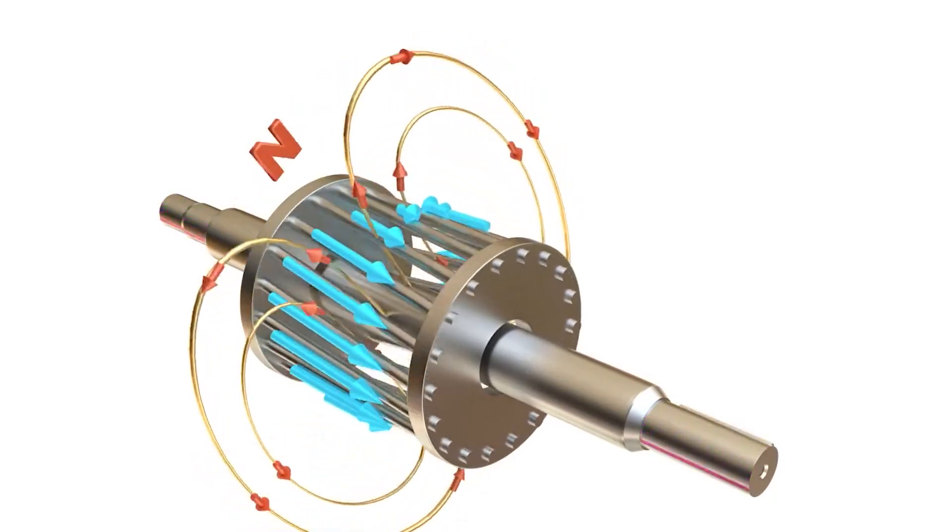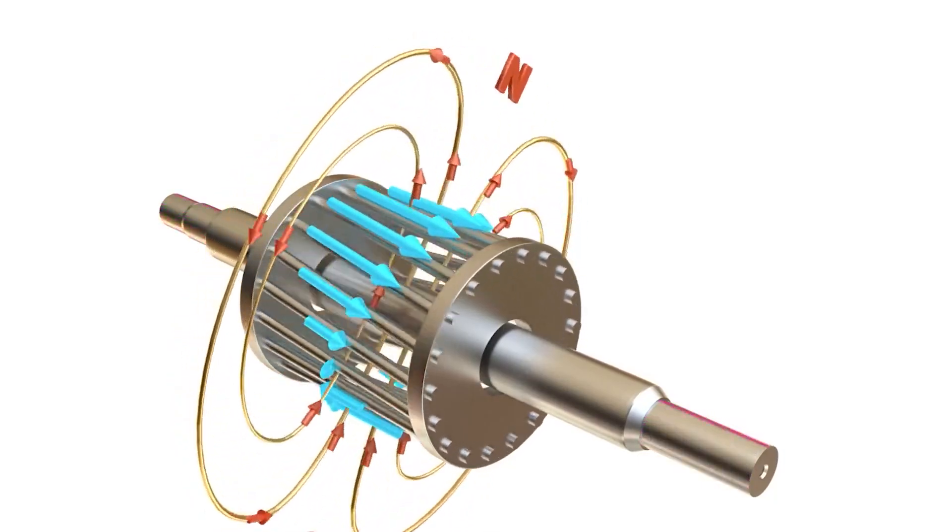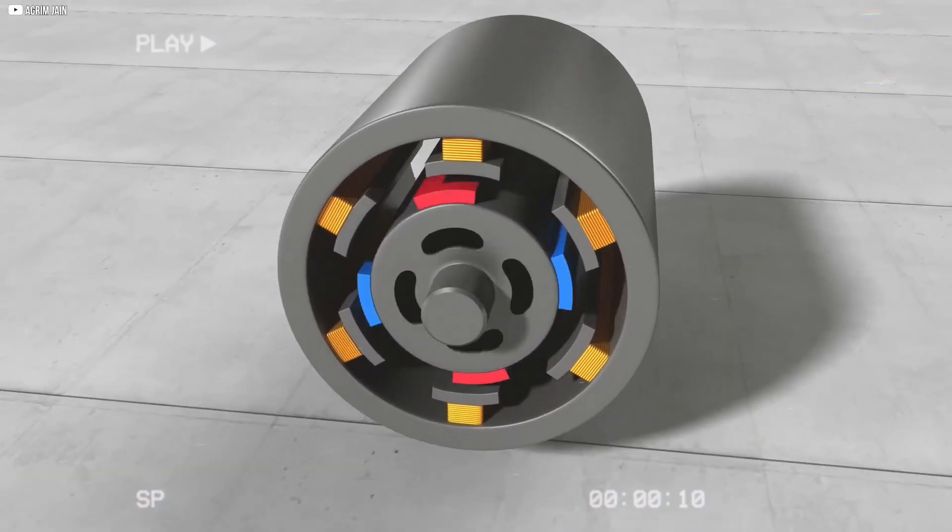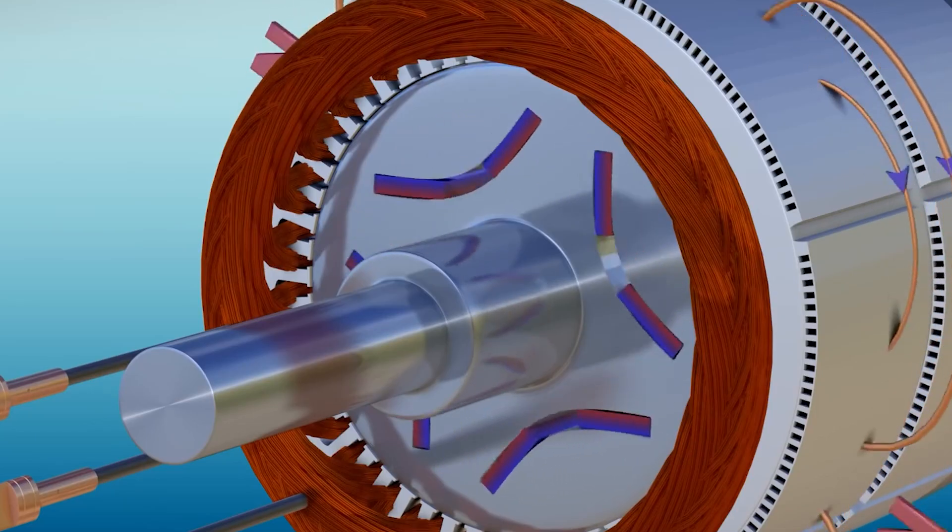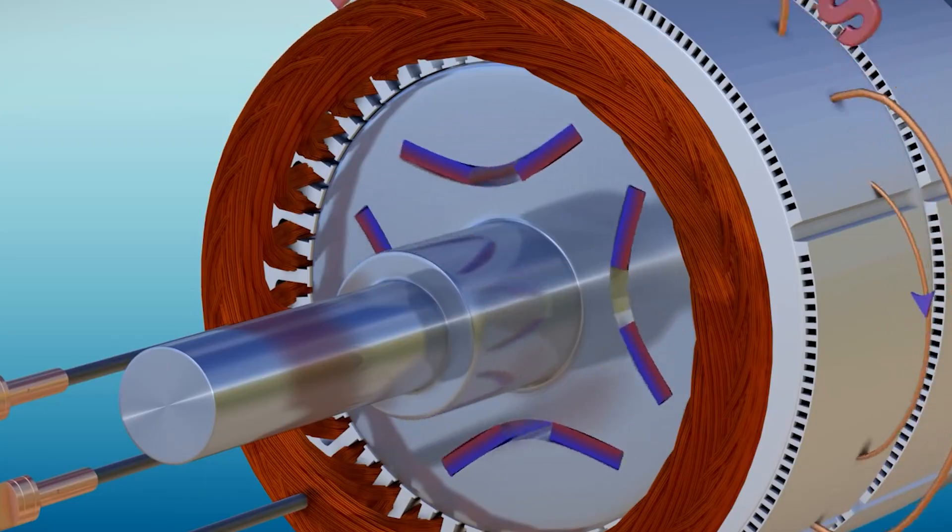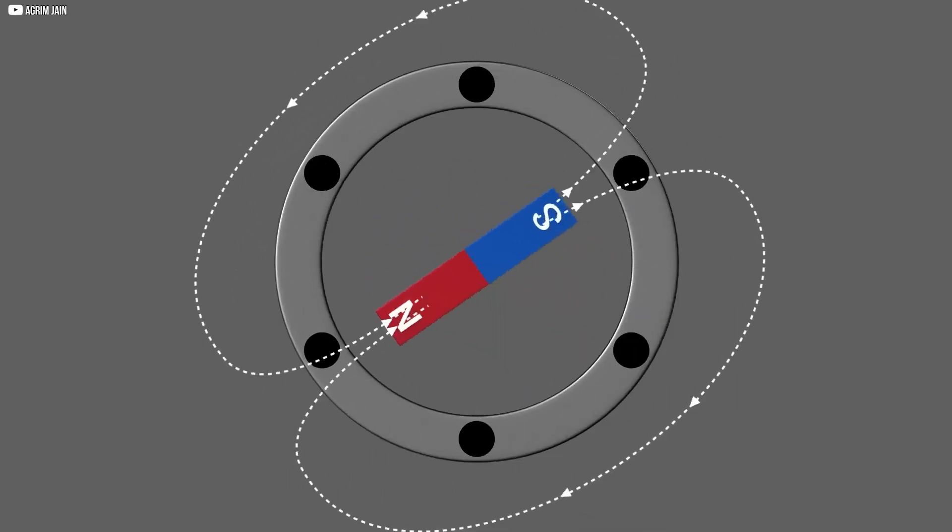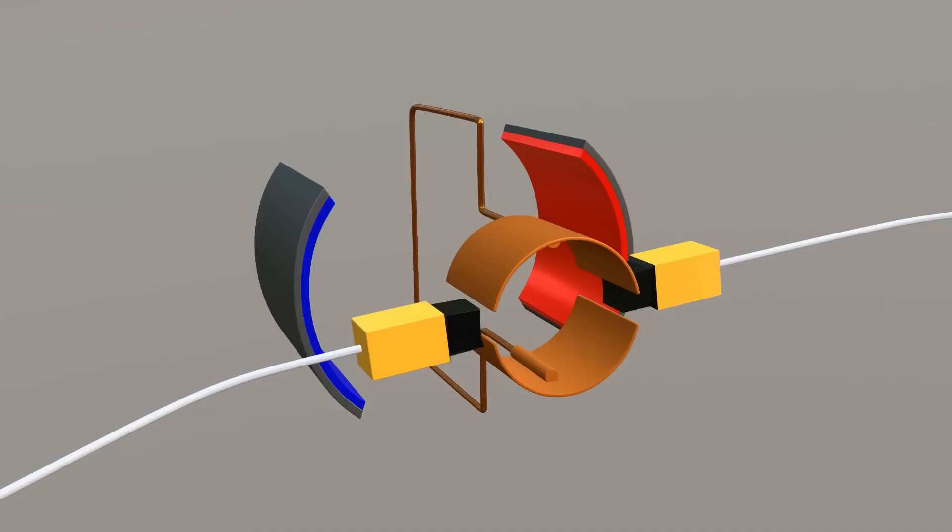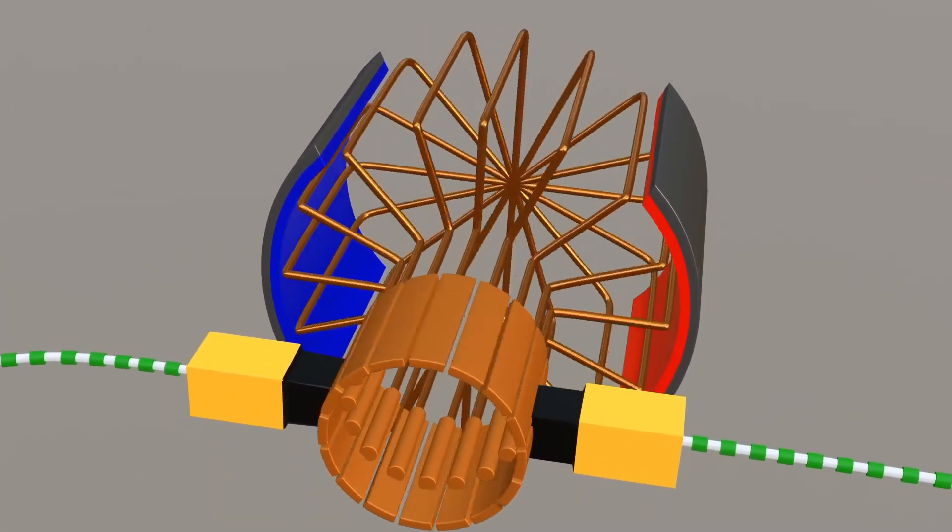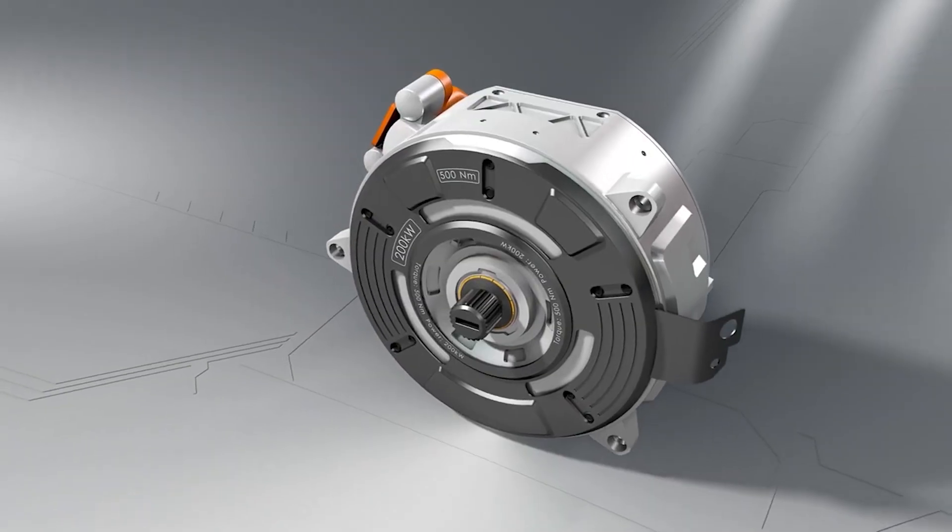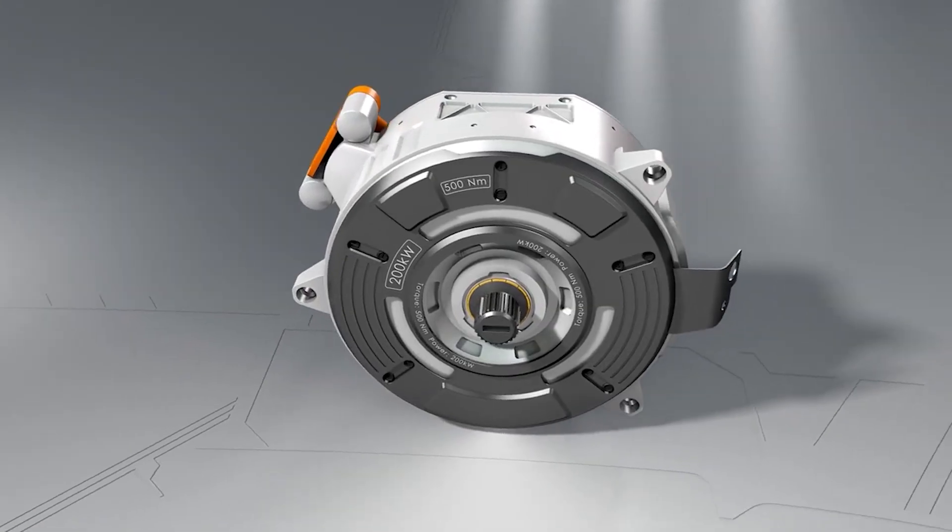Now that we've seen how polarity reversal keeps the motor spinning, let's talk about how to make that spin even stronger. Enter torque, the force that makes the armature rotate. Torque is directly related to the strength of the electromagnet and the amount of current flowing through the wire. The stronger the electromagnet, the more force it can apply to the armature, which means a faster and more powerful motor.